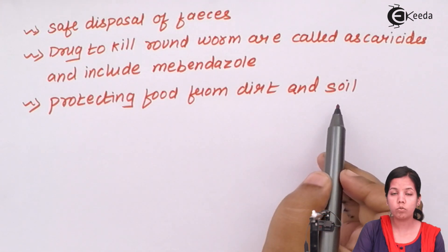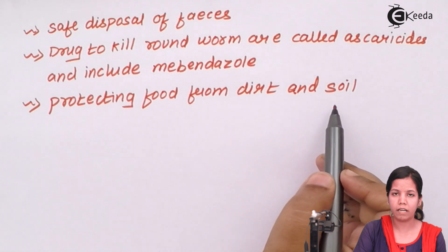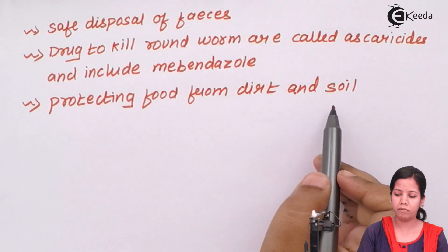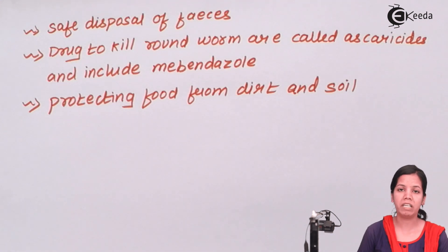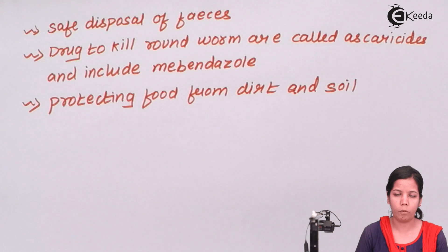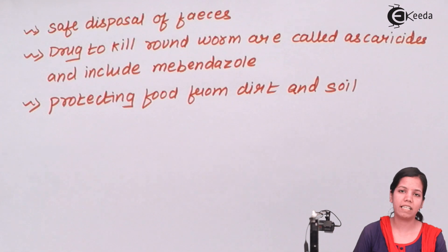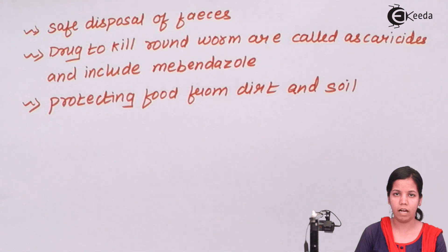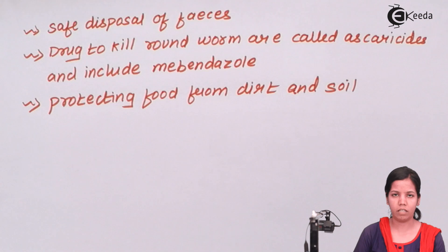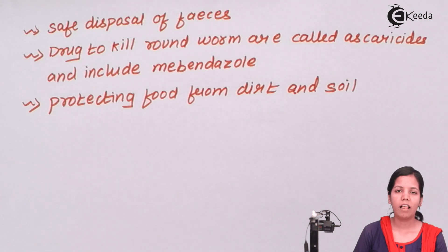Protecting foods from dirt and soil is one way to protect oneself from Ascaris infection. Especially green leafy vegetables — when consumed, one should make sure they are not eaten raw without thorough cleaning, because green leafy vegetables can have dirt or mud stuck on them which can harbor Ascaris lumbricoides. In this part of the chapter, we studied Ascaris: the causative organism, how it affects young children and adults, and the symptoms. Thank you.